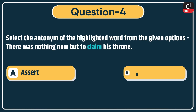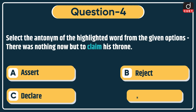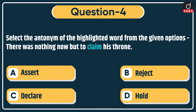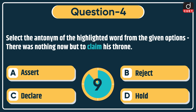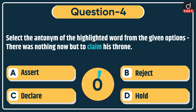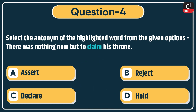Next question: select the antonym of the highlighted word from the given options. 'There was nothing now but to claim his throne.' The highlighted word is claim. Options: assert, reject, declare, or hold. The correct answer is option B, reject.